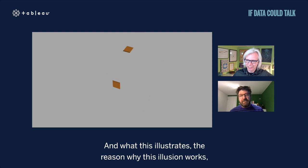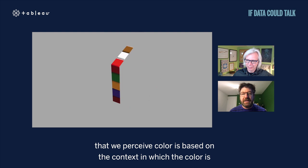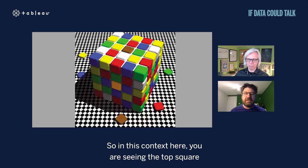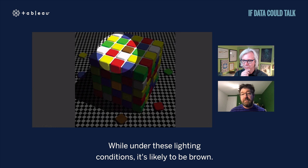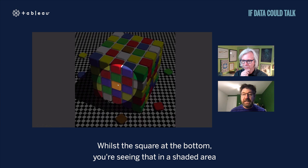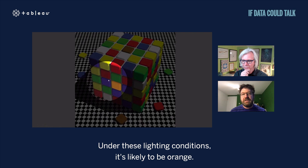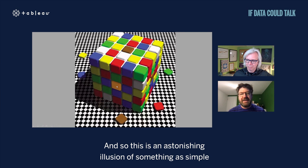The reason this works is that we perceive color based on its context. The top square is seen in a highly illuminated context, so your brain assumes it's likely brown. The bottom square is in a shaded area, so your brain assumes it's likely orange. This shows that something as simple as color is a completely subjective experience.